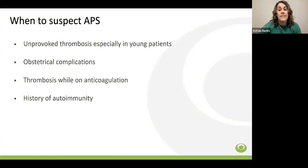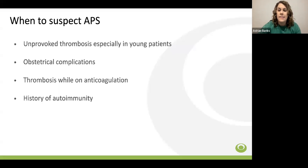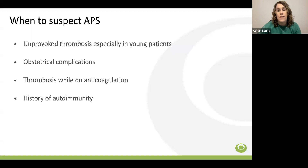Clinical scenarios that raise suspicion for antiphospholipid syndrome include unprovoked venous or arterial thrombosis, especially in a young patient, or clotting in unusual sites such as upper extremities, cerebral venous sinuses, and retinal, ovarian, or renal veins. Patients with recurrent pregnancy complications such as fetal death after 10 weeks of gestation, multiple early pregnancy losses, and/or premature delivery due to severe preeclampsia or placental insufficiency should also be evaluated. Recurrent clotting despite compliance on therapeutic anticoagulation, and any of the above in patients with a known underlying autoimmune condition, are additional red flags.